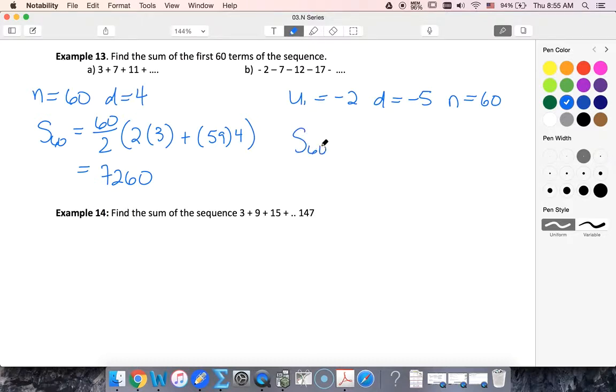So s sub 60, again 60 over 2, 2u1 plus n minus 1 is 59 times the common difference.